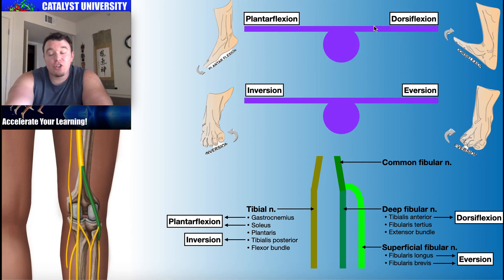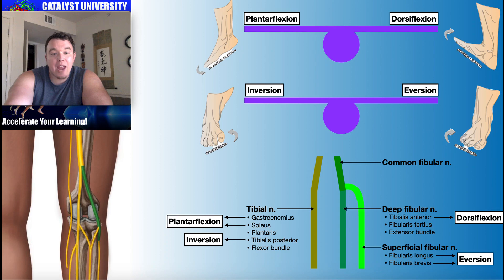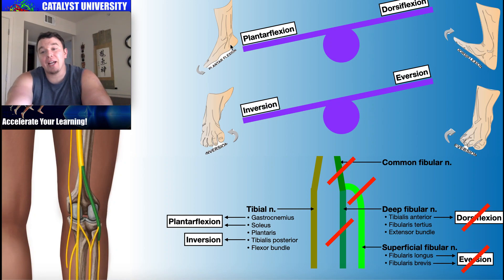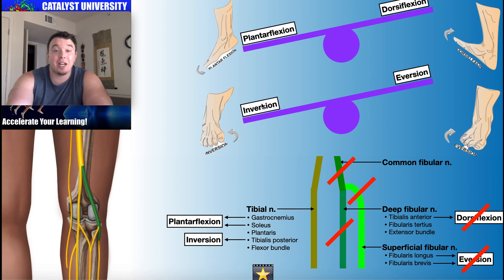Remember, plantar flexion and dorsiflexion should be in balance, and inversion and eversion should be relatively balanced. Now, if he's lacking dorsiflexion and eversion, an imbalance has been created because those two actions are impaired due to the damage to the common fibular nerve and its two branches. Plantar flexion is now unopposed by dorsiflexion, so his ankle is going to sit in more plantar flexion. Also, inversion is now unopposed due to the lack of eversion, making it much more likely that he's going to invert and roll his ankle — his is far more likely to roll because inversion is now unopposed.